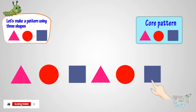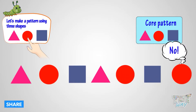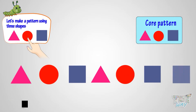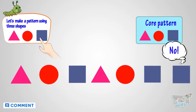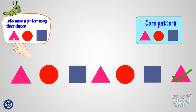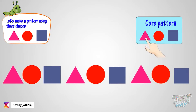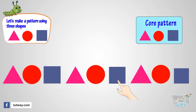Now, what will come next? Circle? No! Square? No! Triangle? Yes! This is right! We have to repeat the core pattern after a square, and our core pattern starts with a triangle. It's looking nice!